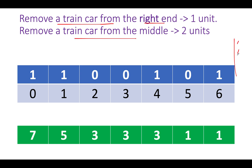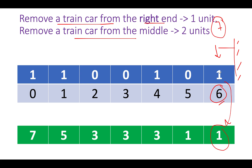Starting at index 6 — the rightmost element is illegal. There is only one way: remove it from the right end. How many total elements do we have? Seven. So n minus i = 7 minus 6 = 1 unit. We set this value to 1.